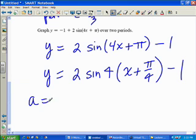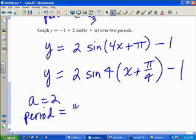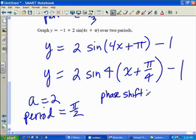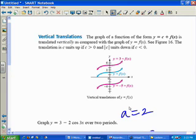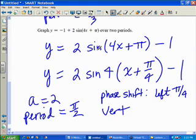So amplitude is 2. Amplitude is 2. Period will be 2π over 4. π over 2. So every π over 2 radians, it's going to complete a cycle. And it looks like we're going to move the whole thing to the left. So we've got a phase shift left π over 4. And then it looks like that we're going to have a vertical translation. So we're just going to call them vertical translation of down 1 unit. Down 1 unit.